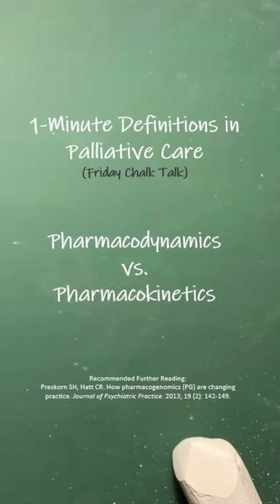Kinetics is step one in how the body responds to a drug after it's administered. It's metabolism, distribution, absorption, excretion — some call it the fate or the life cycle of the drug. And the kinetics impacts the drug's access to the target receptor.